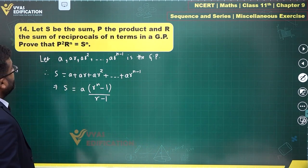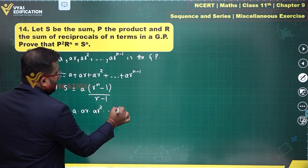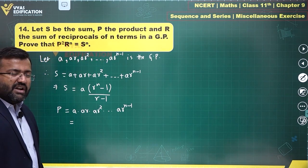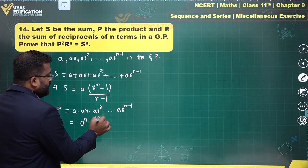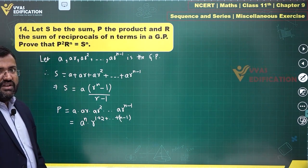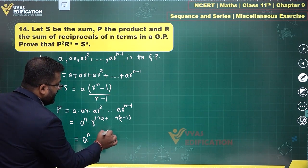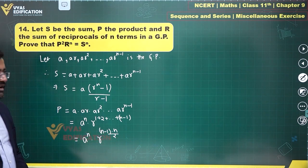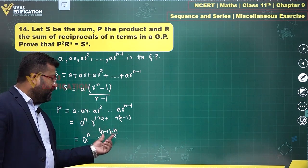P is the product: a · ar · ar² · ... · ar^(n-1). Here a is multiplied n times, so this is aⁿ · r^(1+2+...+(n-1)). The exponent of r is the sum of first (n-1) natural numbers, which equals (n-1)·n/2. So P = aⁿ · r^(n(n-1)/2).